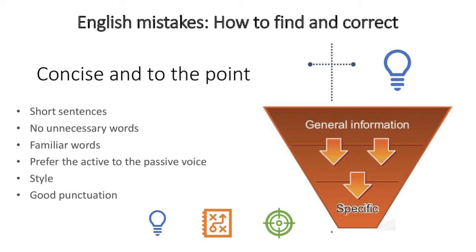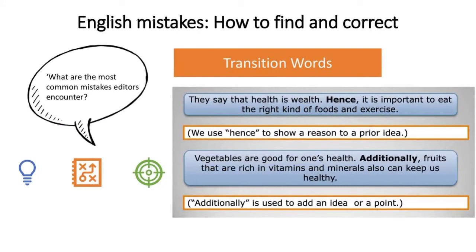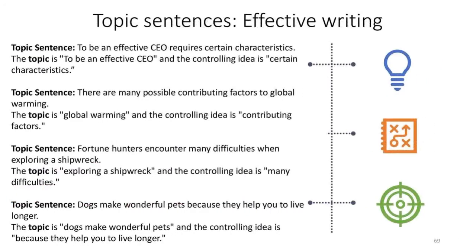Be concise and to the point: short sentences, no unnecessary words, keep it familiar. Transition words give people linking sentences. For example: 'They say that health is wealth. Hence, it is important to eat the right kind of food and exercise.' The transition word 'hence' shows the reason and links it back to the prior idea. 'Vegetables are good for one's health. Additionally, fruits that are rich in vitamins and minerals can also keep us healthy.' The word 'additionally' links those two sentences and provides context.